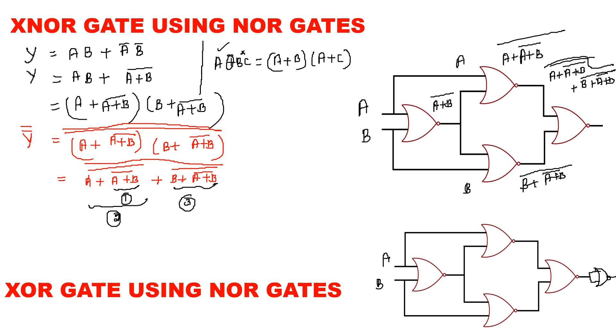To get what? XOR gate. So, this is the diagram for XOR gate. And to implement XOR gate, how many NOR gates are needed? Five NOR gates are needed.